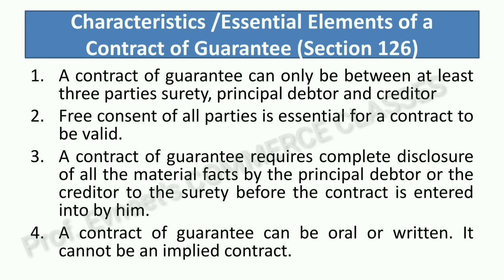Third: a Contract of Guarantee requires complete disclosure of all the material facts by the principal debtor or the creditor to the surety before the contract is entered into. 'Material' means important — when you see the word 'material' in law, it means important. The contract of guarantee will be valid only if the principal debtor and creditor disclose all important facts to the surety. If material facts are concealed, the contract is not valid.